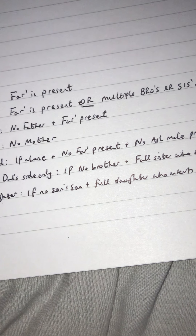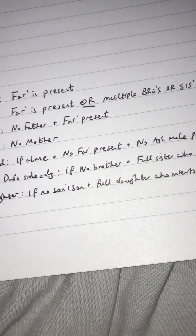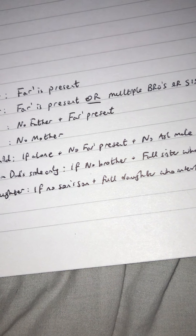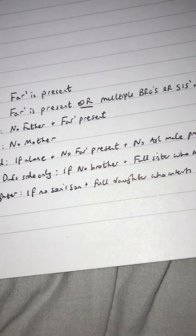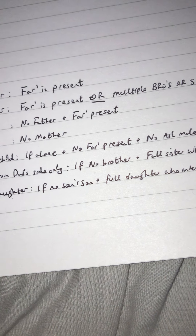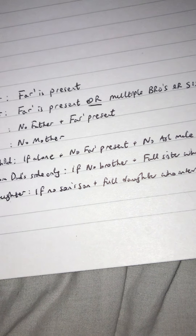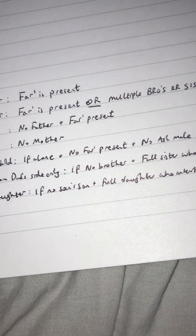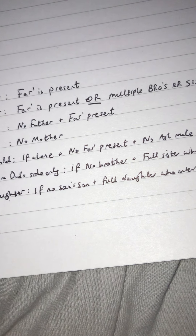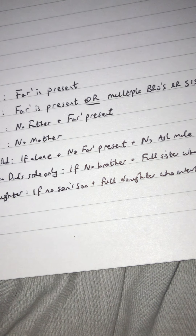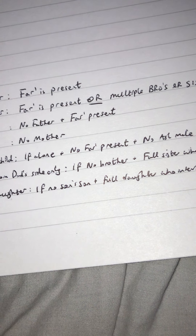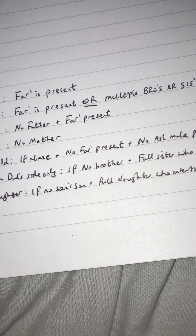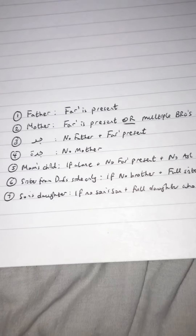For example: a person dies and leaves behind a daughter, a son's daughter, and an uncle. The daughter gets a half — because there is no son, no mu'assib, and no other daughter. As for the son's daughter, there is no son's son present, and we have a daughter inheriting a half. Therefore the son's daughter gets a sixth to complete two-thirds. As for the uncle, he gets what remains by ta'seeb.